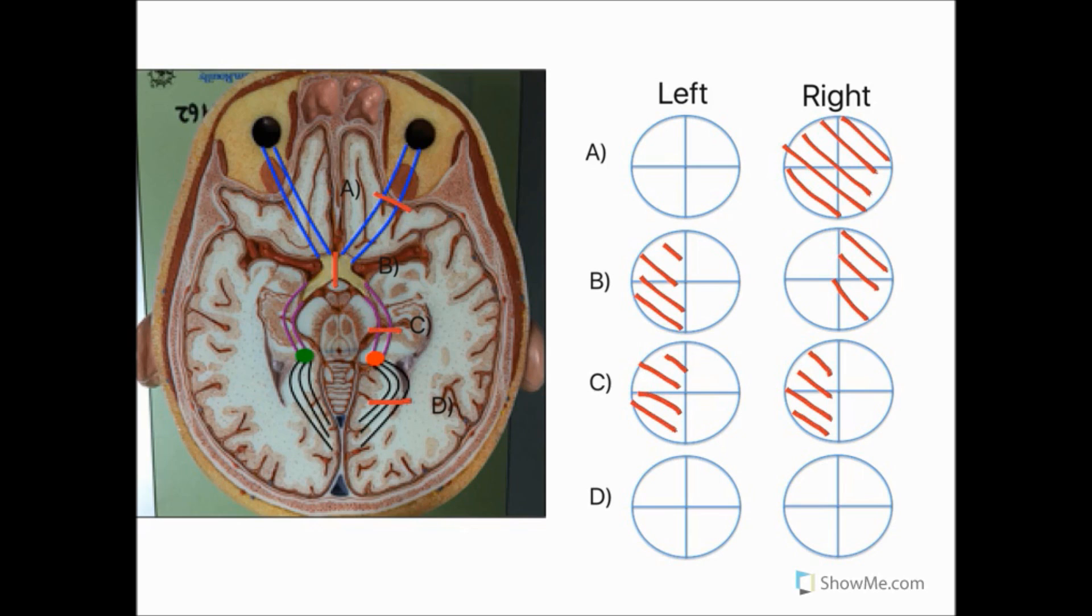So bearing in mind the same principles as in the previous lesion, this lesion causes a loss of vision only in the left superior fields of both eyes, which can be drawn like this. So this is called left superior homonymous quadrantanopia.